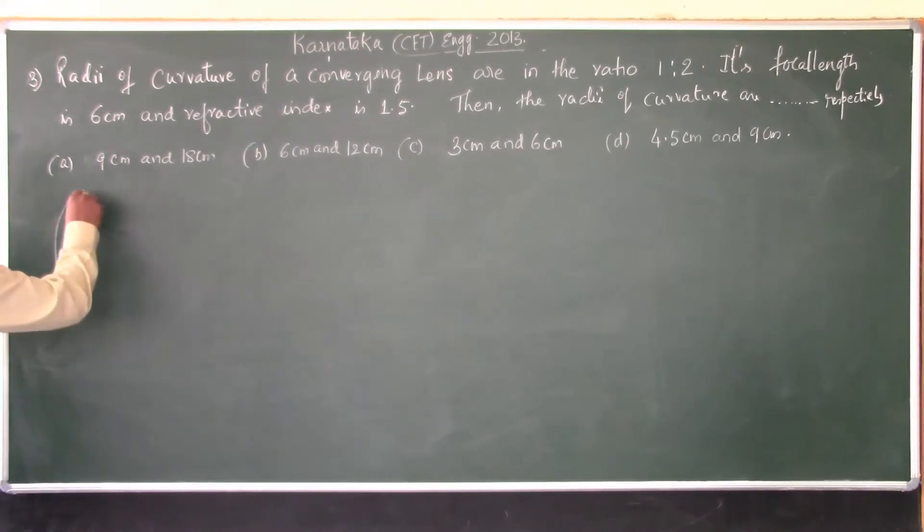See, the radii of curvature of a convex lens, it's given as R1 and R2 and focal length is given as 6 centimeters. The refractive index of the lens is given as 1.5 and now you are supposed to find out R1 and R2 value, the radii of curvature of the two converging faces.